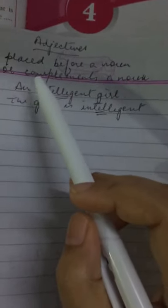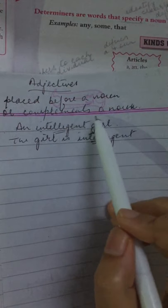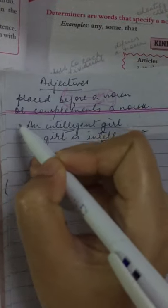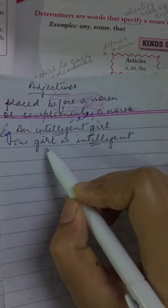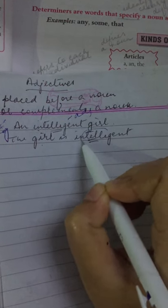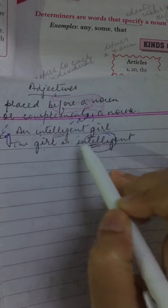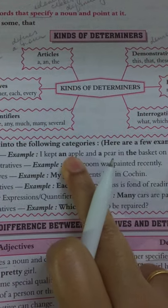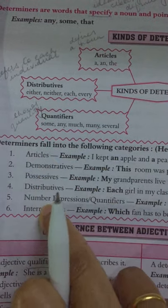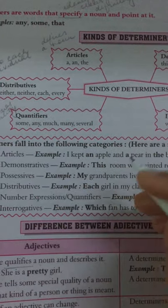For placement: an adjective is placed before a noun or complements a noun. For example, 'an intelligent girl' — intelligent comes just before the noun. Or 'the girl is intelligent' — it comes after the noun as a complement. Determiners, however, are always placed before a noun across all categories — articles, demonstratives, possessives, distributives, quantifiers, interrogatives — all always come before the noun.